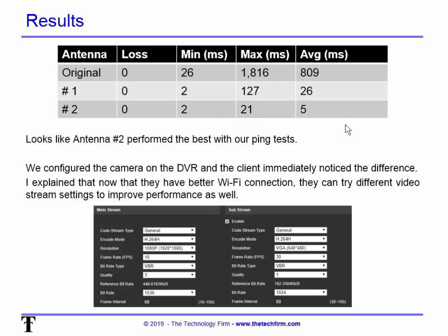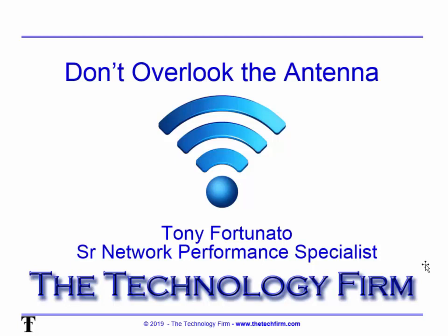I also showed them that within the camera configuration you can try different video stream options to improve performance. Sending a 1080p stream has a very different bandwidth requirement than a VGA stream. This is context-dependent — if the camera is mounted high overlooking a general area just to detect presence, you're not going to get fine detail anyway, so a substream or lower-quality mainstream may be a better fit. The connection works fine now, but these are things they can explore later to improve further. Don't overlook the antenna — that's it folks, have a good day, bye for now.